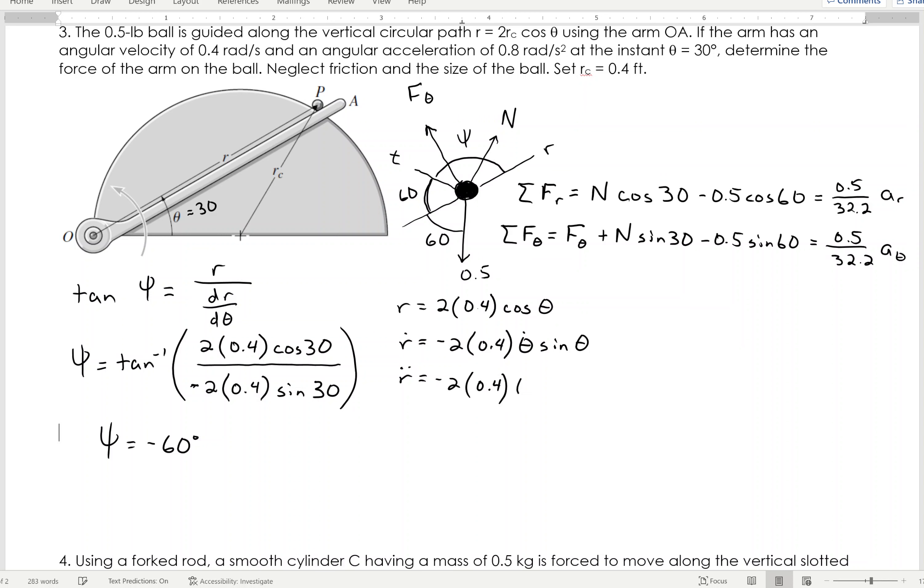Going one step further, R double dot then becomes negative 2 times 0.4 times theta double dot sine, and then minus 2 times 0.4, and then it'll go theta dot squared times cosine. Hopefully, we've done enough of these time derivatives, now we're following along with that.